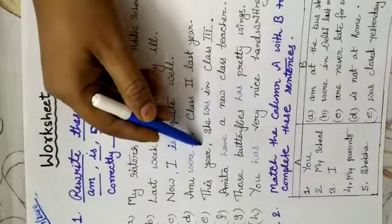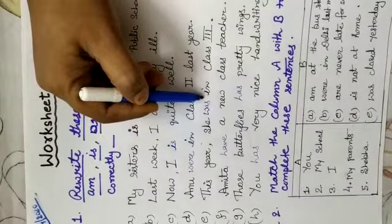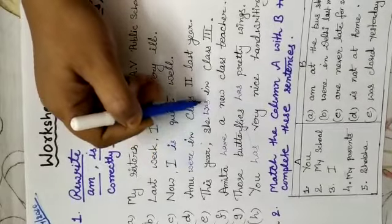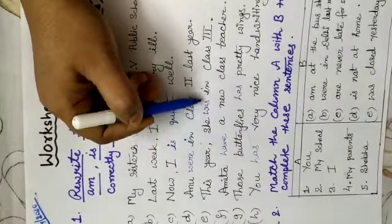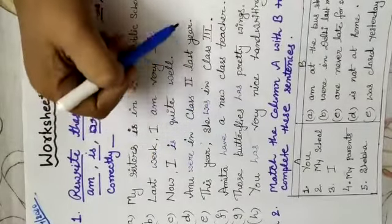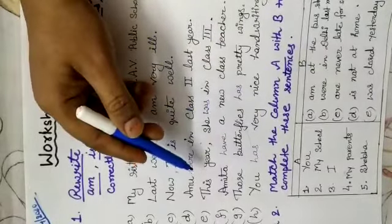This year. She was in class 3. This year. She was. This year means abhi. Abhi. Abhi wo kya. Hay ya thi. Was in class 3. Or he is in class 3. Just correct it.